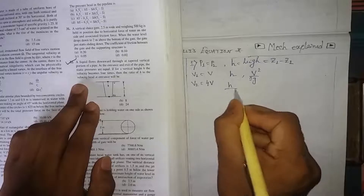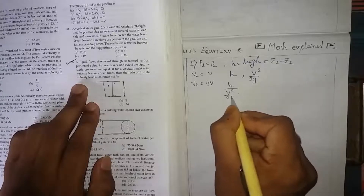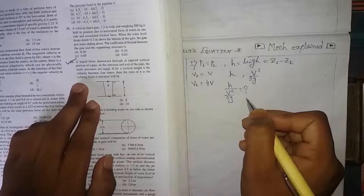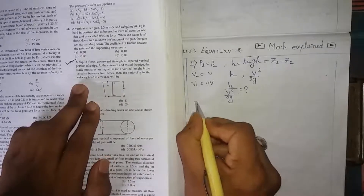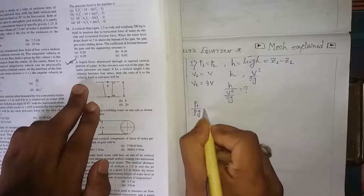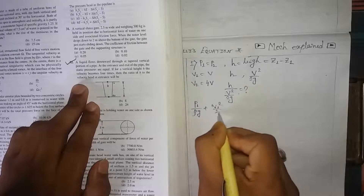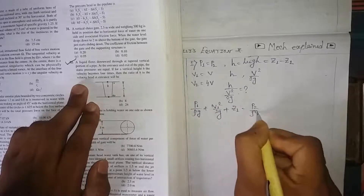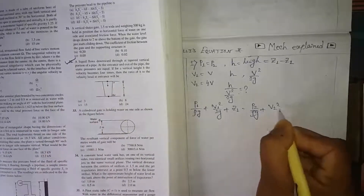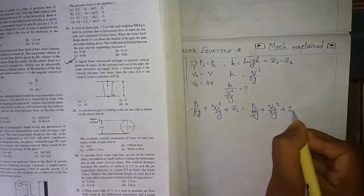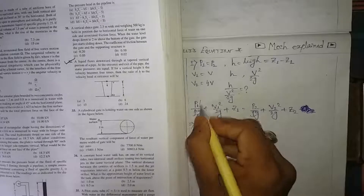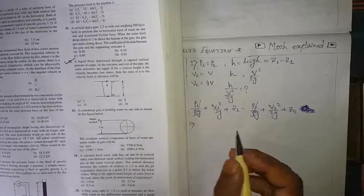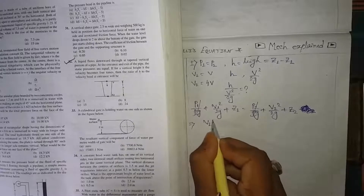They are asking for the ratio h divided by (v²/2g). We apply Bernoulli's equation: P1/ρg + v1²/2g + z1 = P2/ρg + v2²/2g + z2. Since P1 and P2 are the same, both pressure terms cancel out from both sides.